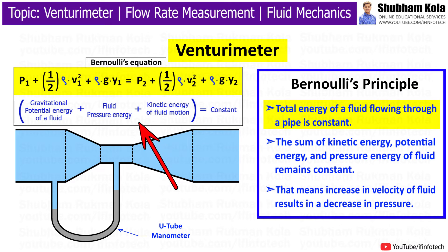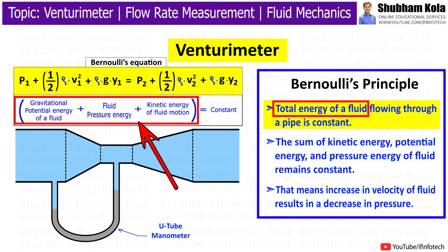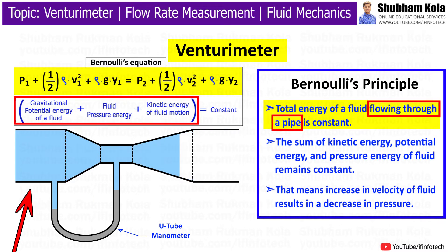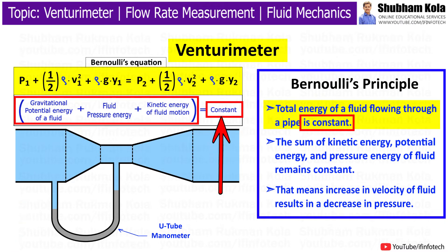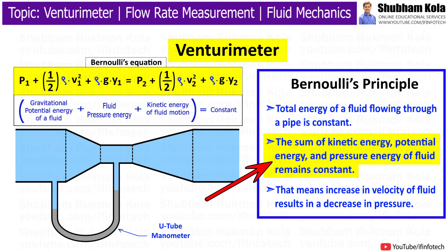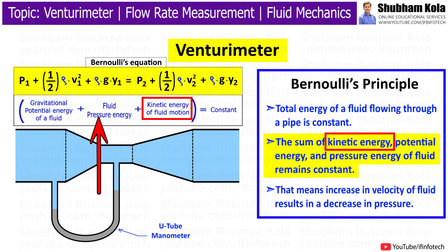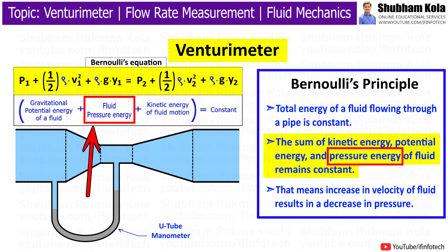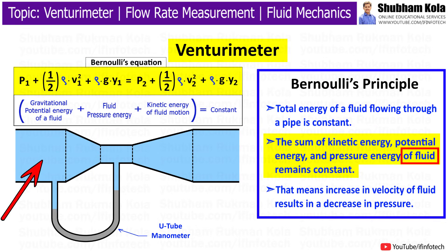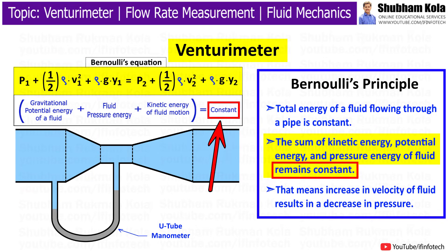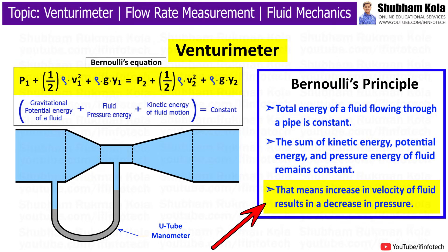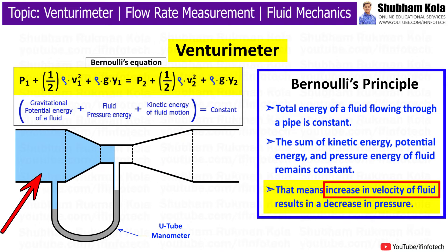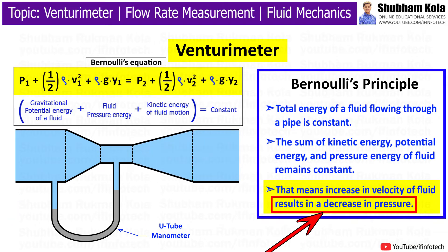We state that the total energy of the fluid flowing through the pipe is constant. This means that the sum of kinetic energy, potential energy, and pressure energy of a fluid remains constant. That means increase in velocity of fluid results in decrease in pressure.